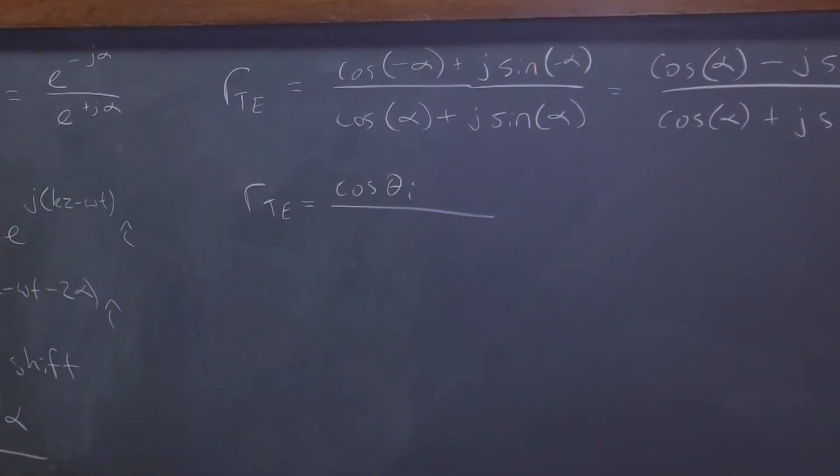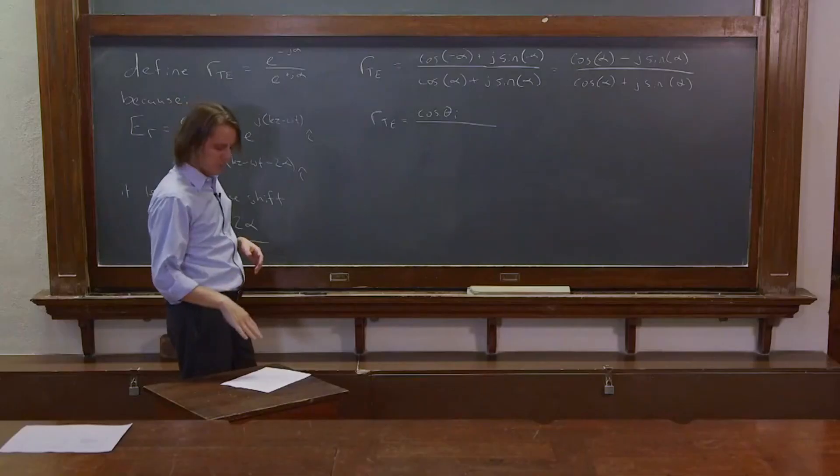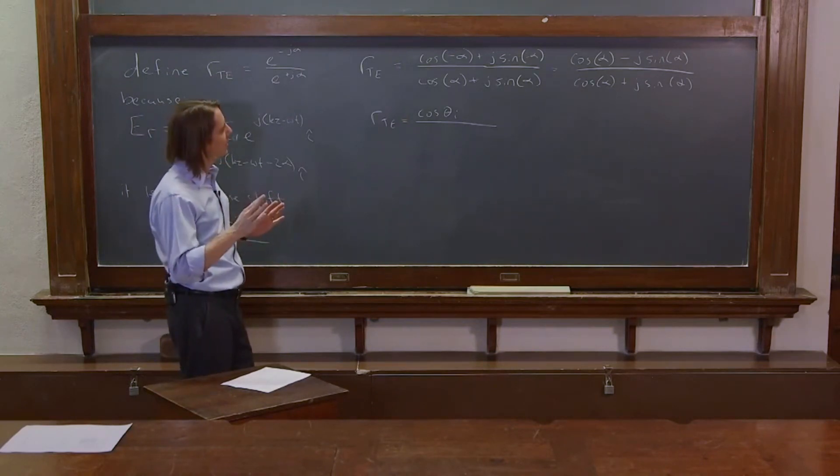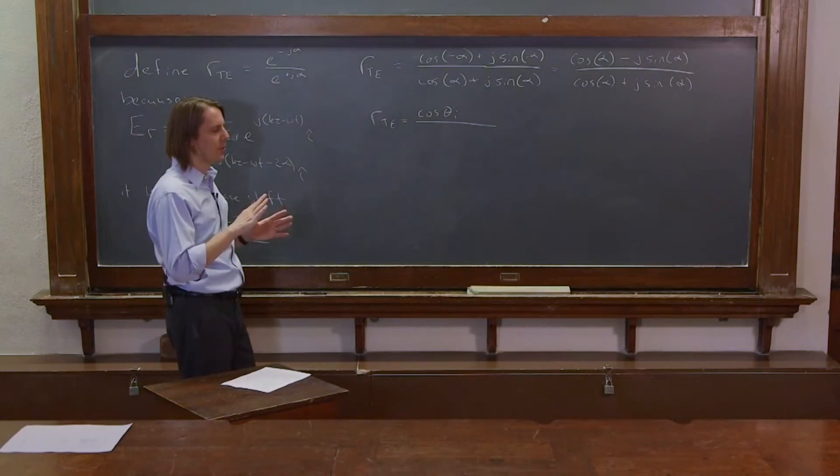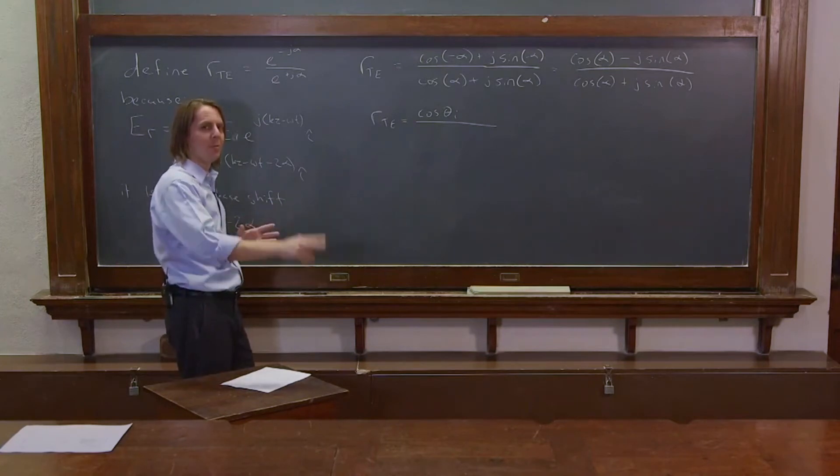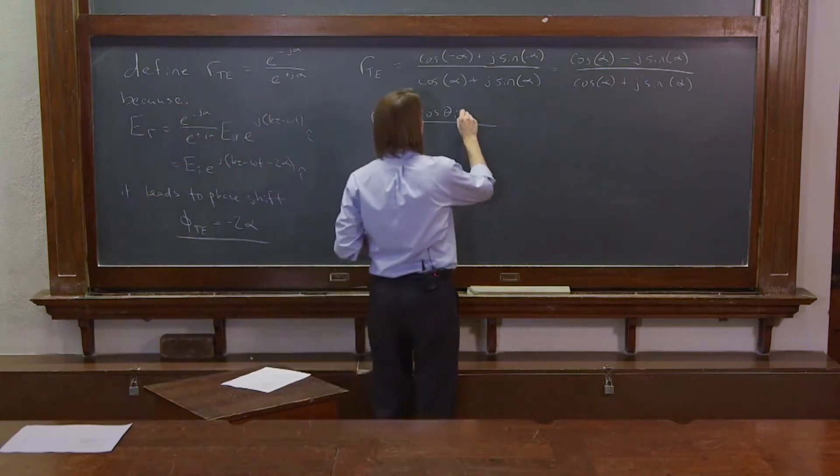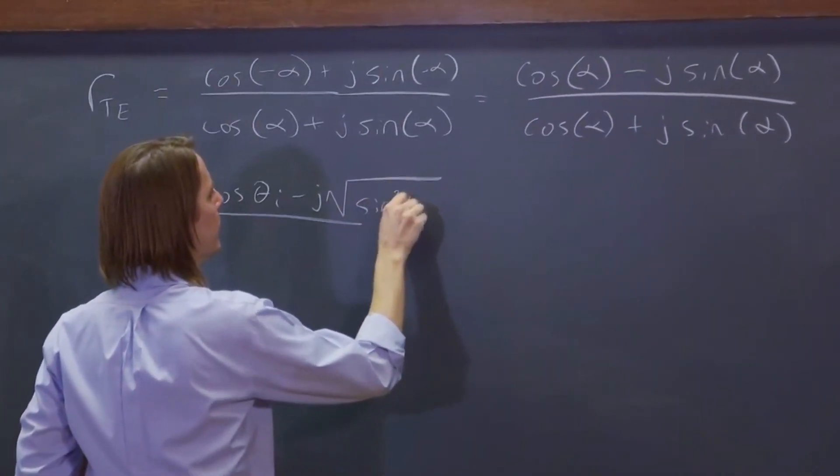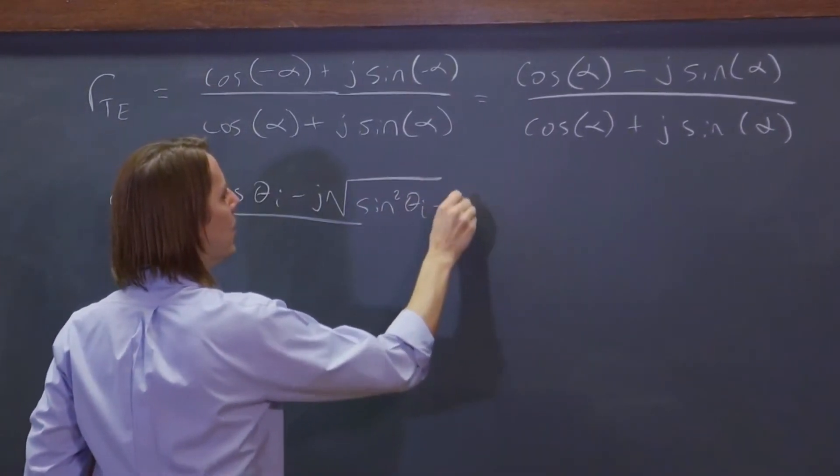And then it was minus the square root of n squared minus n squared theta. But we're just talking about the case where we're in total internal reflection, the case where it does become imaginary, that square root. So we're going to go ahead and do what we did before, which is flip it around and pull out a j.